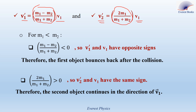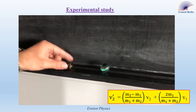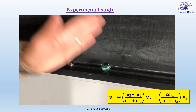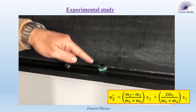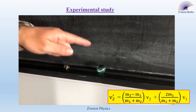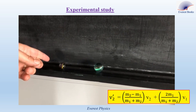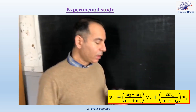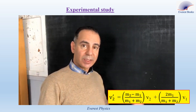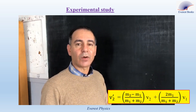Now Rabia will show you the experiment for this case. The first marble of mass M1 moves from left to right with velocity V1, while the second marble of mass M2 — where M2 > M1 — is initially at rest. After the collision, the first marble bounces back, whereas the second marble moves with a velocity in the direction of V1.